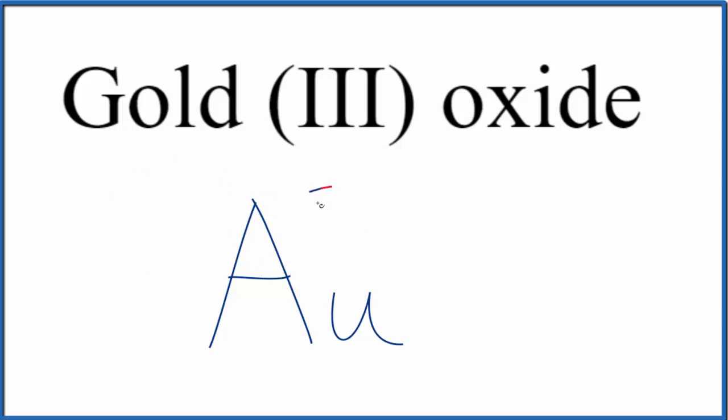So we're going to write a 3+ up here for gold. We have gold and we have oxygen. We have a metal, a transition metal and a nonmetal, so it's going to be an ionic compound.